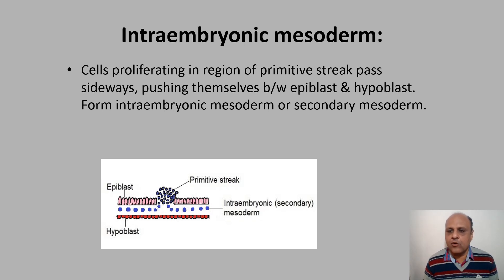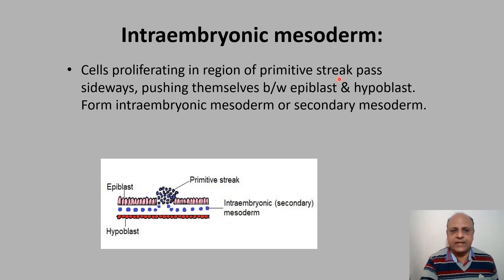The bilaminar disc was formed by day 8 after fertilization, while by day 14 the procordal plate and primitive streak are formed. Now cells proliferating in the region of the primitive streak pass sideways, pushing themselves between epiblast and hypoblast. This is the epiblast, this is the hypoblast, and this is the primitive streak — the cells formed here push themselves between epiblast and hypoblast.